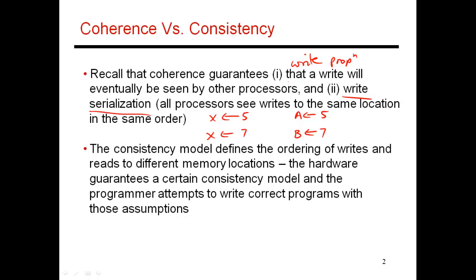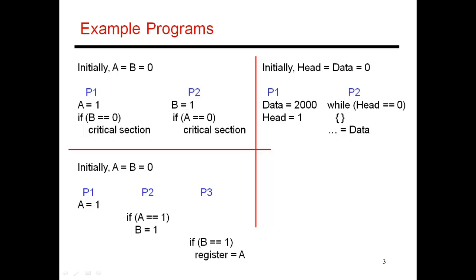So if one thread were to write a 5 into A, and a different thread were to write a 7 into B, then there's no guarantee being provided about how these writes are seen by different threads. One thread could see the write of A first and then the write of B, and a different thread could see it in exactly the opposite order. So the coherence protocol does not make any guarantees about these writes, but the consistency model then goes on to specify what kinds of reorderings are valid in the hardware. And the programmer has to have some understanding of what these reorderings are going to be, otherwise it's really hard to write a correct program. So this will be made more clear as I walk through some examples.